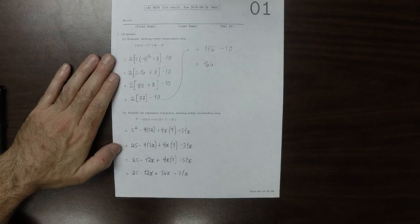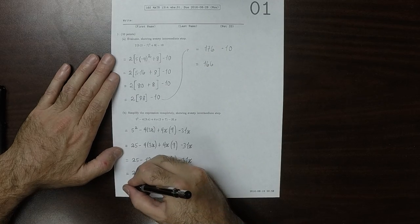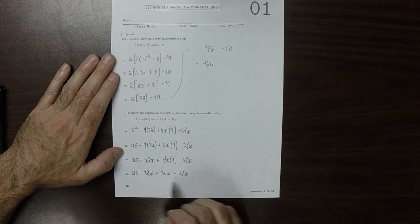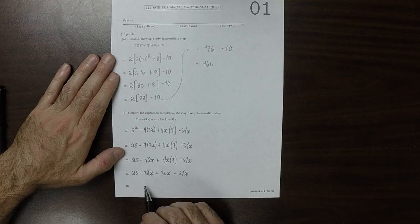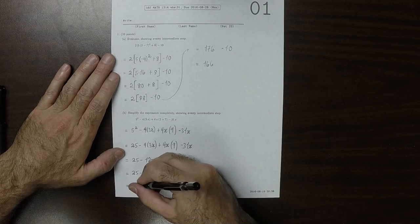So now everything is adds and subtracts. So we'll proceed from the left. So negative 12x plus 36x.